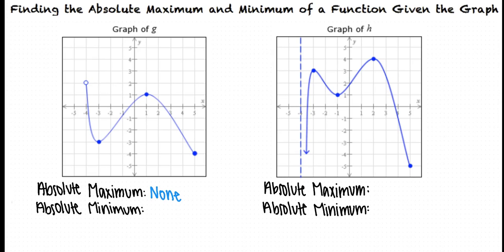But there is an absolute minimum. We see that at the point (5, negative 4), there is no other point on the graph that has a lesser y-coordinate than this. We identify our absolute minimum as the y-coordinate of this point, which is negative 4.